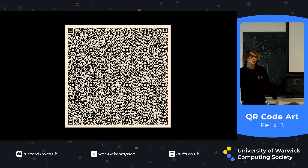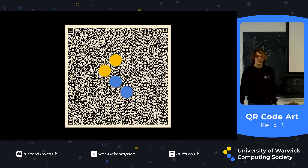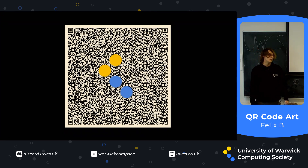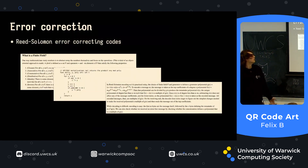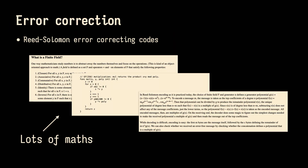Going back to this massive QR code, some people — and you've probably seen this before — put an image over the QR code to personalize it. We're not doing that today, but you can do this because of error correction. QR codes use an error correction scheme called Reed-Solomon error correcting codes. It's a lot of maths, and I'll give you some of the main takeaways you need to know for QR codes.